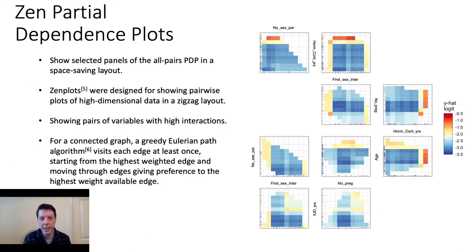Our final visualization today are what we call Zen partial dependence plots. These show selected panels of all pairs of PDPs in a space-saving layout. Zen plots were designed for showing pairwise high-dimensional data in a zigzag layout.